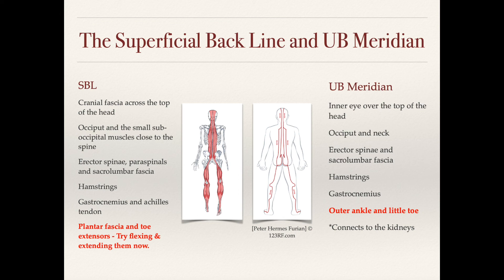Here on the right side you'll see the urinary bladder meridian. We know that it begins in the inner eye and goes over the top of the head. It includes the occiput, the neck, and the erector spinae muscles, as well as the sacral lumbar fascia and the low back. It passes through the gluteus maximus area and down to the hamstrings, gastrocnemius, and into the Achilles tendon.